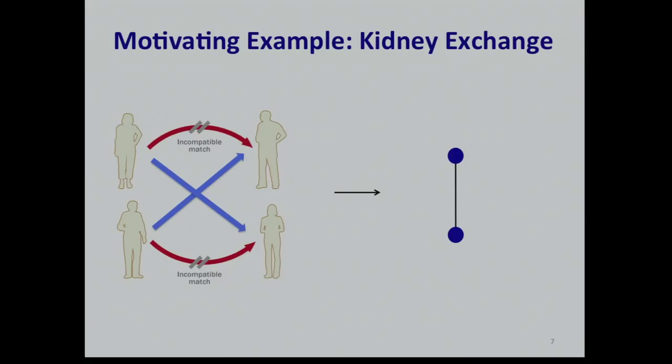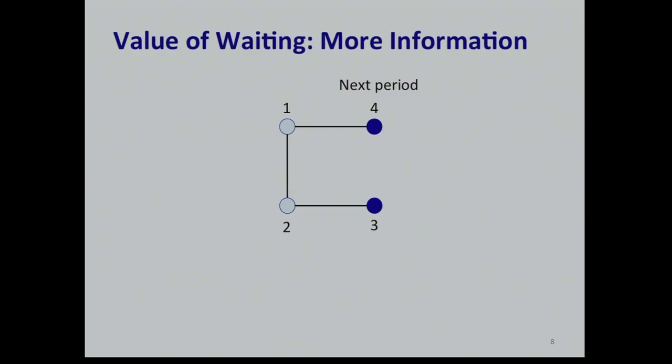Now let's see why timing is an important question. Suppose I'm a market maker with patient-donor pairs one, two, and three. One can be matched to two, two can be matched to three. In a static environment, matching one to two or two to three saves two people. But suppose tomorrow patient-donor pair four arrives, and four can only exchange with one — then the optimal decision is to match one to four and two to three. I cannot do that if I did not wait in the first period. So information about future trade opportunities is important.